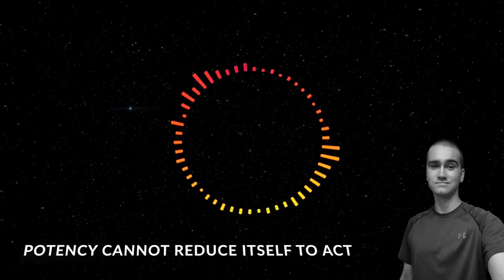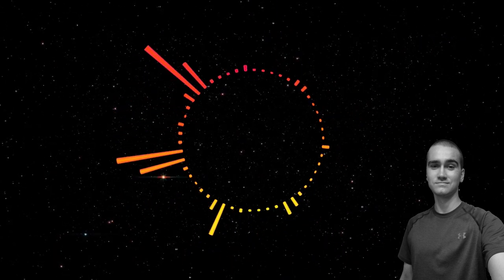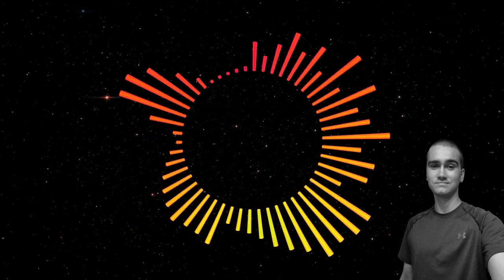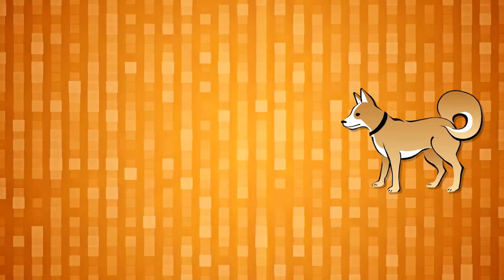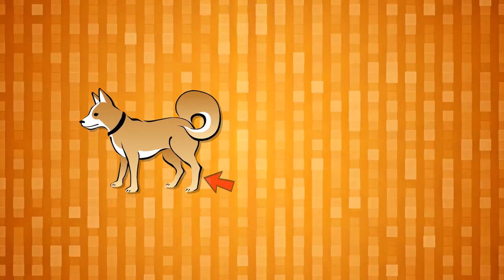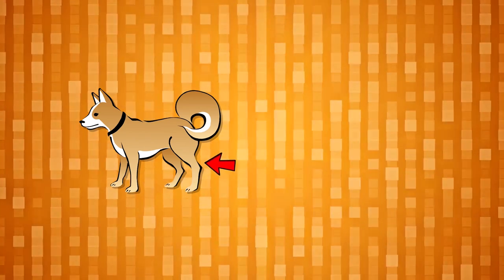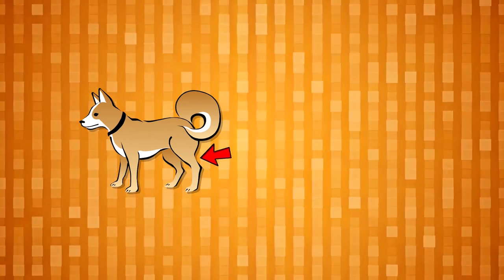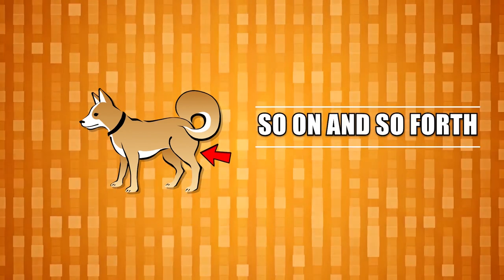This together with some external influence that actualizes this potential suffices to show how the change can occur. So, no potential can actualize itself, and in this sense, anything that changes requires something outside of it to change it. This is true even of animals which seem at first glance to change themselves, for what this always amounts to is really just one part of the animal being changed by another. The dog quote-unquote moves itself across the room, but only insofar as the potential motion of the legs of the dog is actualized by the flexing of the leg muscles, and their potential to be flexed is actualized by the firing of the motor neurons, and the potential of the motor neurons to fire is actualized by the other neurons, and so on and so forth.